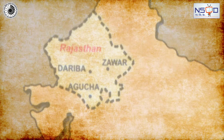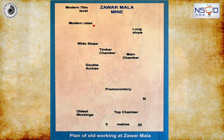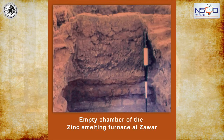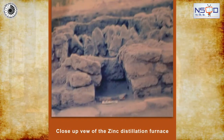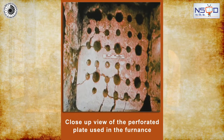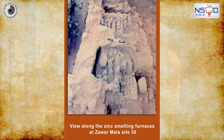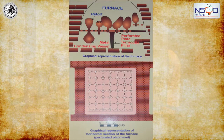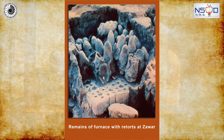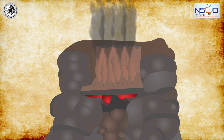In ancient India, early miners and metallurgists used a special reverse distillation apparatus called Khosli retorts to extract zinc. Early Indian alchemists, who were familiar with the process of distillation and condensation of mercury, influenced the design of Khosli. It was this reverse distillation process that may have led to the design of zinc smelting at Zawar on an industrial scale.